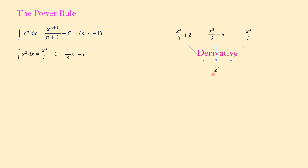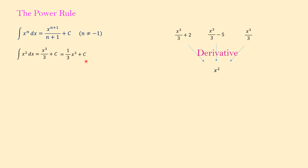So if we want to find the antiderivative — the opposite of derivative — and go back to the original function, we have no idea what the constant was. Maybe c was 2, maybe c was negative 5, or maybe c was even 0. So we put this c as a placeholder for the constant that was possibly in the original function. In general, we place this c at the end of any indefinite integral.